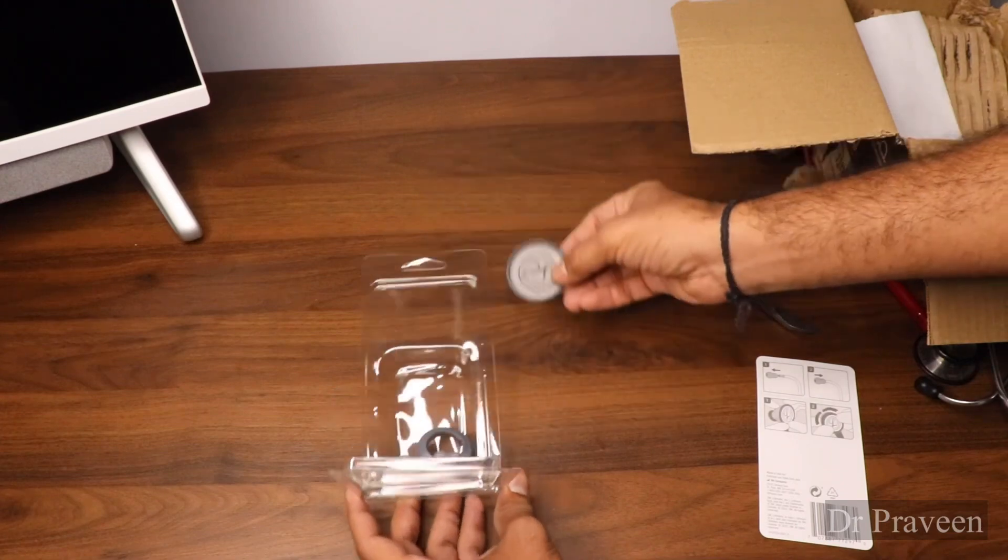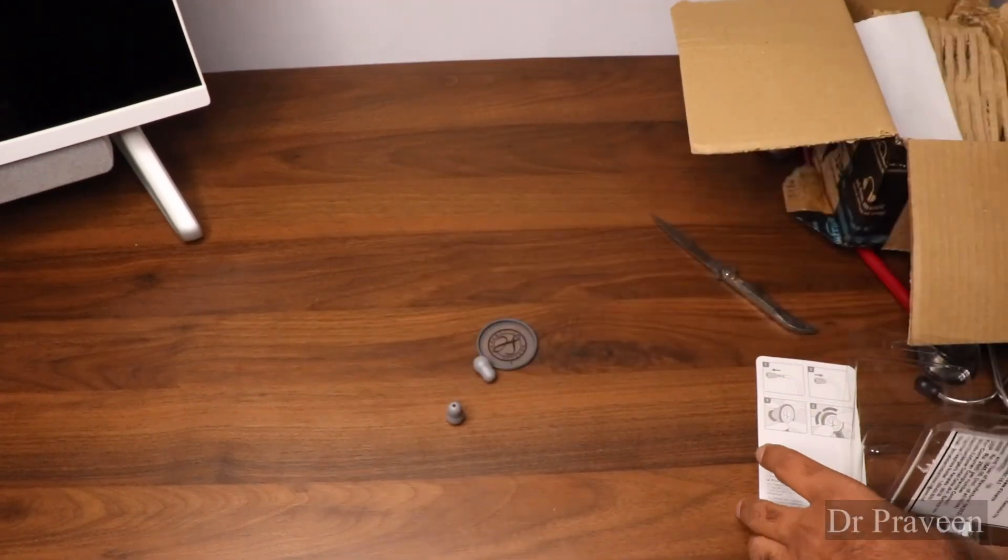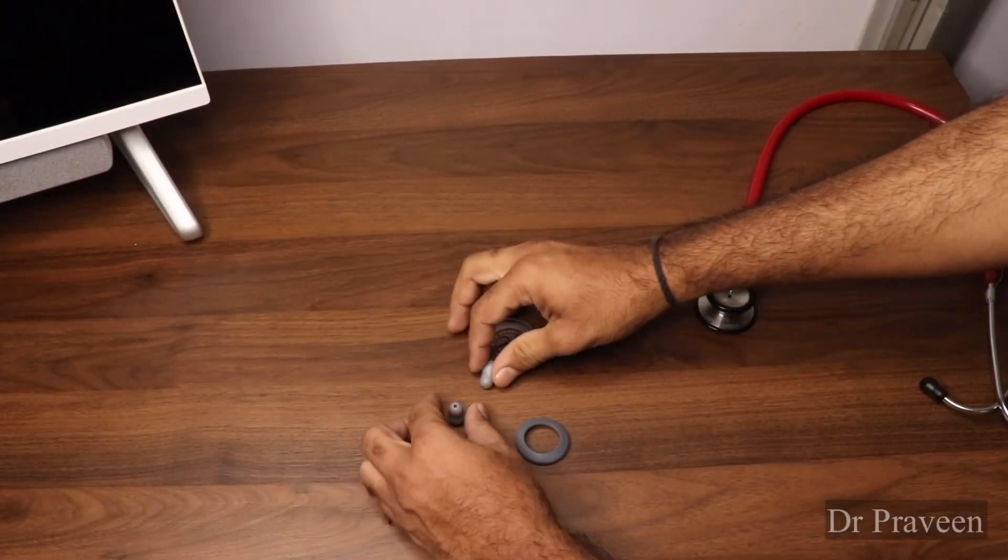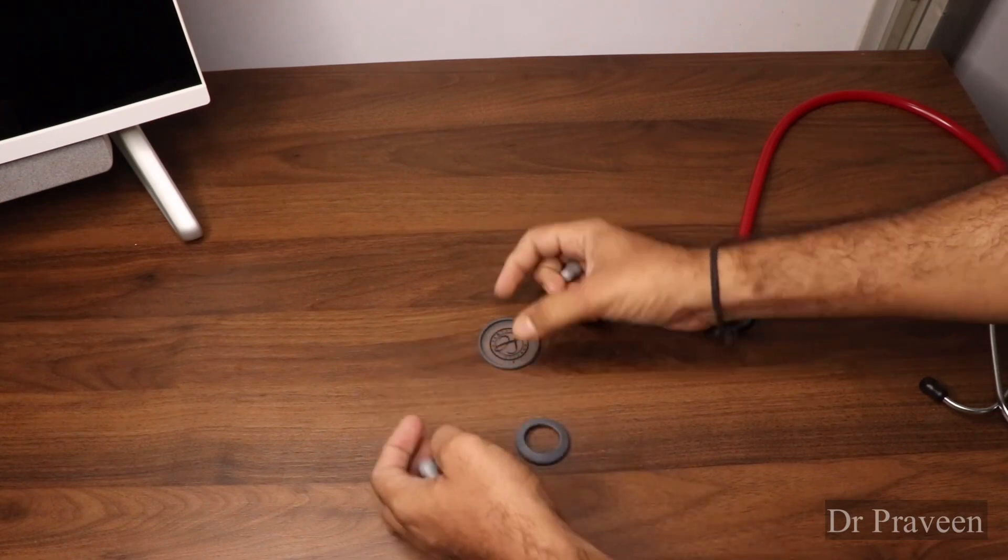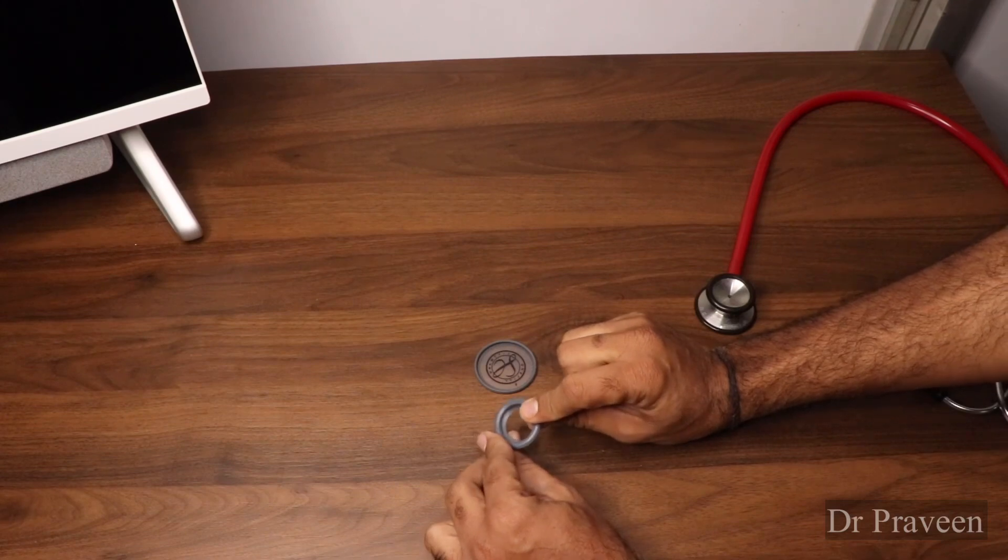This is the diaphragm we got. Two earpieces, these are the new pieces. One diaphragm we get and another one is for the posterior small chest piece.